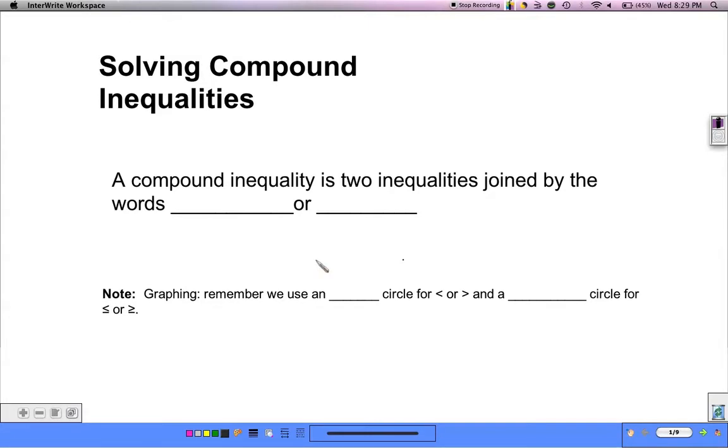So a compound inequality is when we have two inequalities joined by the words 'and' or the word 'or'.